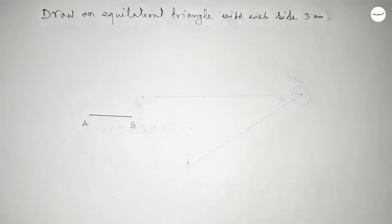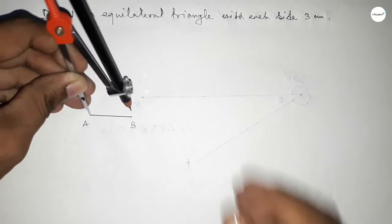Taking this is A and B, so AB equal to 3 centimeter. Now taking the length AB by compass.